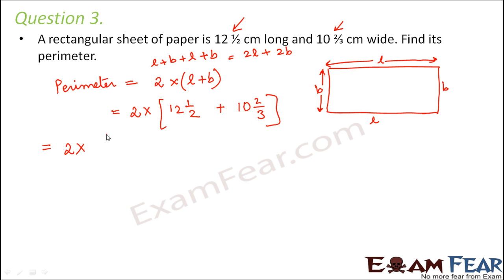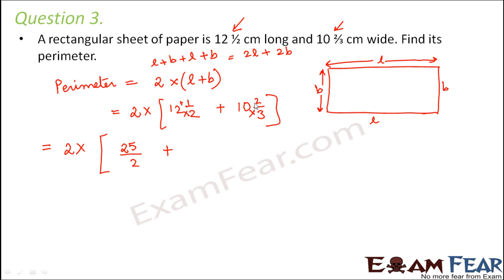First we need to convert them into improper fractions. 12½ becomes (12×2 + 1)/2 = 25/2, and 10⅔ becomes (10×3 + 2)/3 = 32/3.